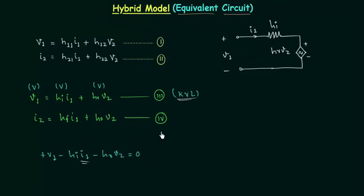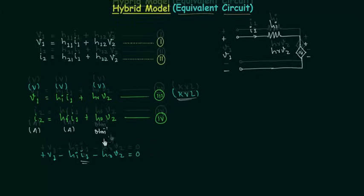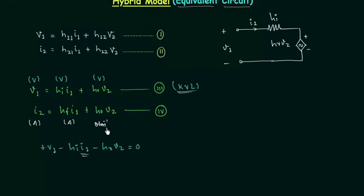In Equation 4, each term has units of current. I2 is in amperes. HF is the dimensionless forward current gain, and HF·I1 is in amperes. HO is the output admittance (unit: ohm⁻¹), and HO·V2 gives amperes as well. Since all three terms have units of current, we apply Kirchhoff's current law to obtain the equivalent circuit.